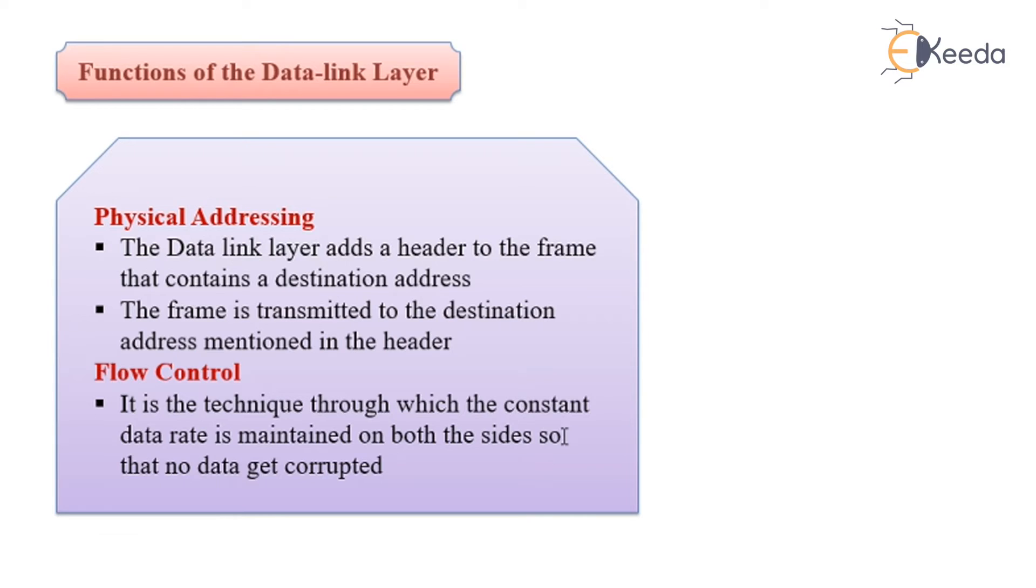Functions of the data link layer. Physical addressing: the data link layer adds a header to the frame that contains a destination address. The frame is transmitted to the destination address mentioned in the header. Flow control is the technique through which the constant data rate is maintained on both sides so that no data gets corrupted.